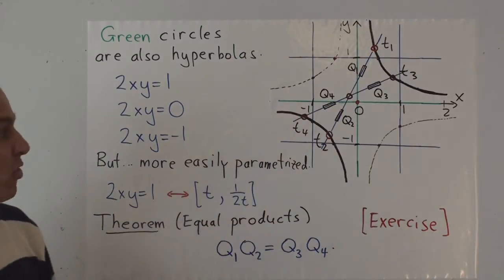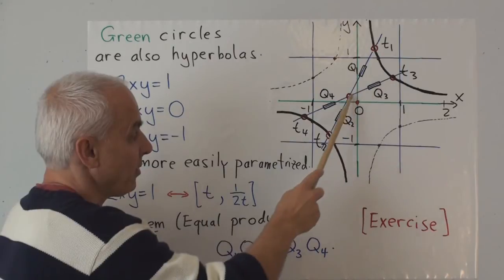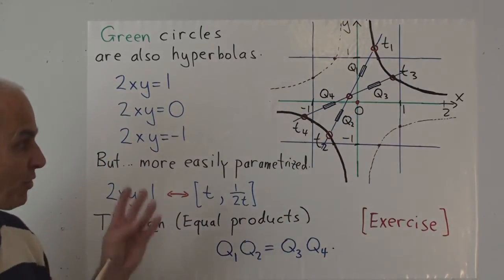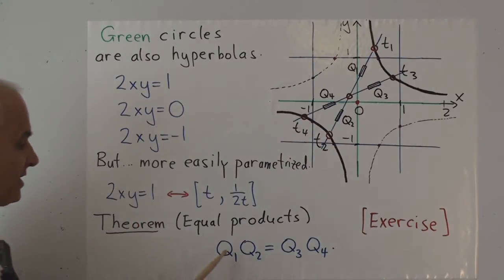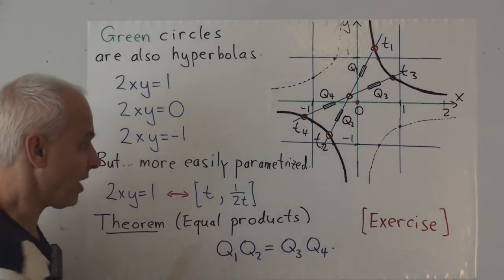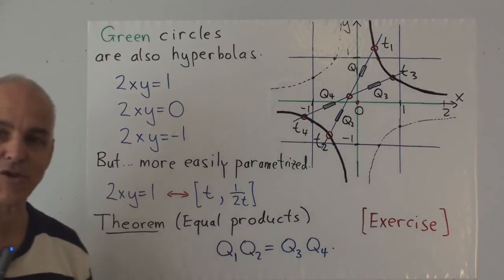And it says that if you have four points on the circle, in fact, on any circle, and you look at where these two lines meet, then we have four quadrances. Let's call that one Q1, that one Q2, that one Q3, and that one Q4. Of course, all these quadrances are now in the green setting.